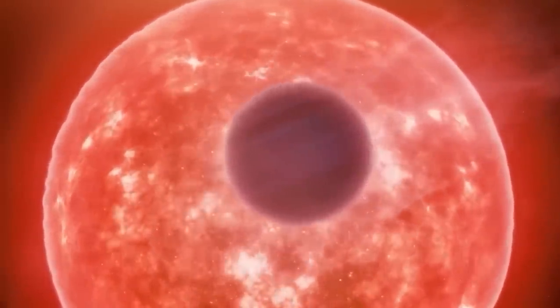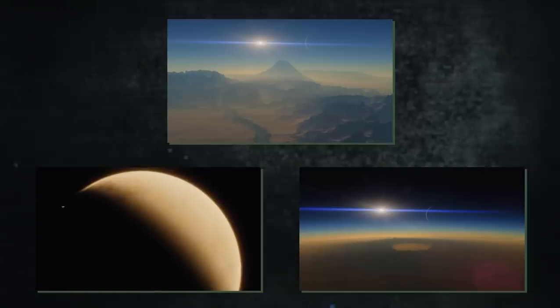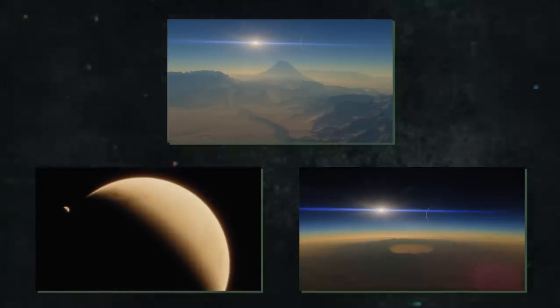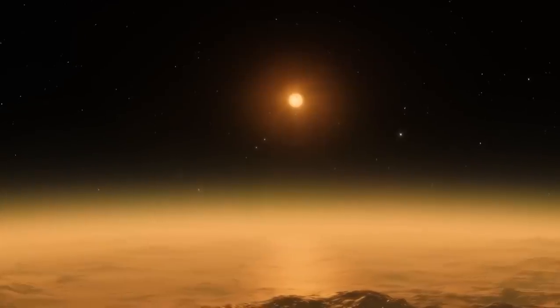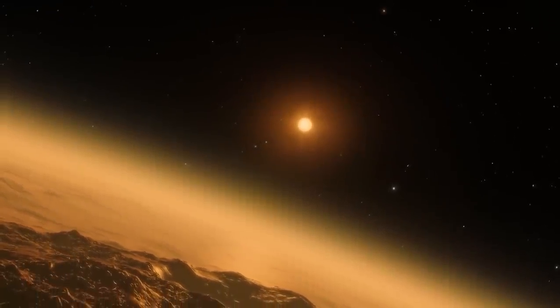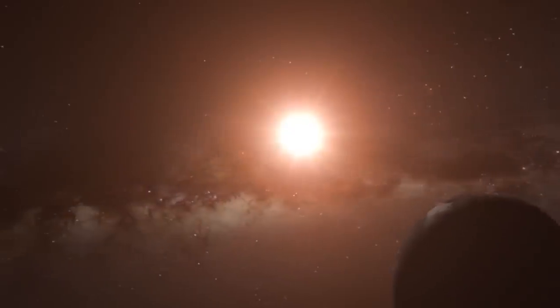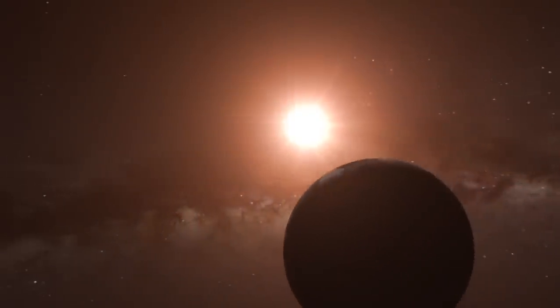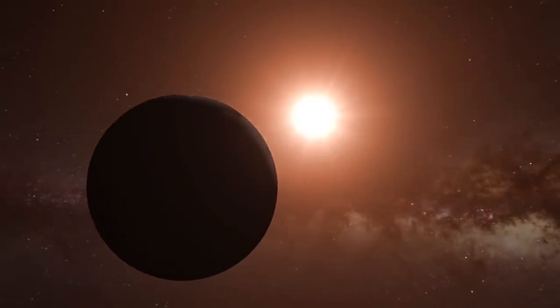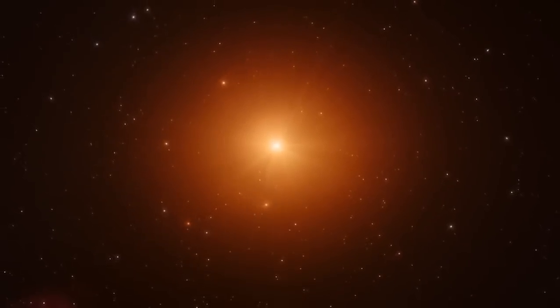What do we know about the brand-new exoplanet that JWST has confirmed? A rocky planet in the Octans constellation, LHS-475b, is located relatively nearby, at a distance of about 41 light-years. The existence of a new exoplanet was suggested by data from a NASA study of space conducted earlier called the Transiting Exoplanet Survey Satellite, TESS. Although JWST evidence indicates that this is a terrestrial planet the size of Earth, it is not yet known if it has an atmosphere.